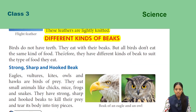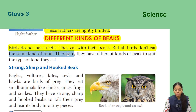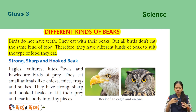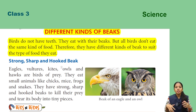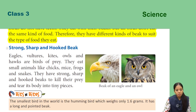Different kinds of beaks. Birds do not have teeth; they eat with their beak. But all birds do not eat the same kind of food. Therefore, they have different kinds of beaks to suit the type of food they eat. For different types of food, they use different kinds of beaks.